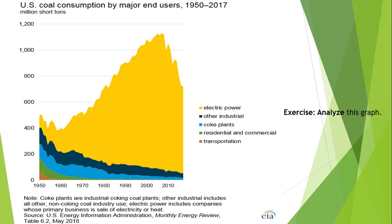Coal consumption: this graph is your exercise. You have to analyze this graph which illustrates coal consumption from 1950 to 2017 by major end users. Most of the coal is used in electricity production, and the remaining portion of the graph you should analyze thoroughly.